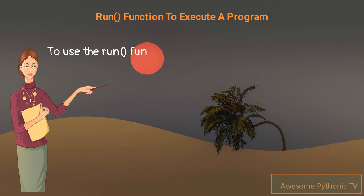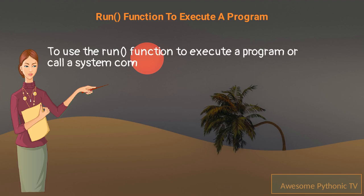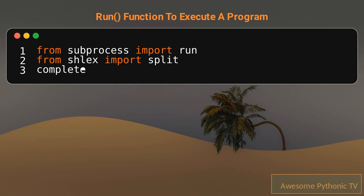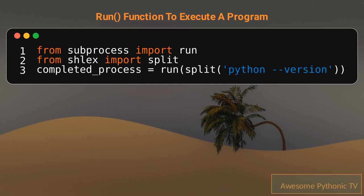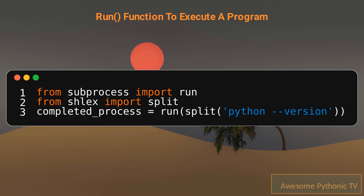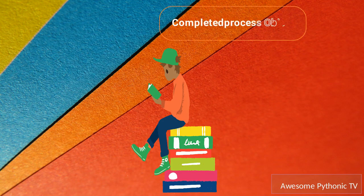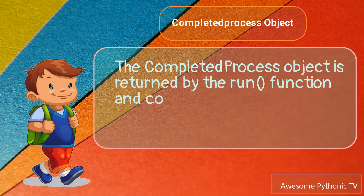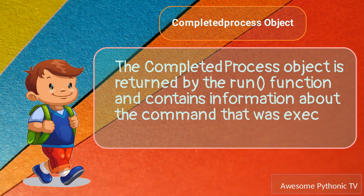To use the run function to execute a program or call a system command from Python, you can use the following code. The code creates a CompletedProcess object that contains information about the command that was executed and the return code.